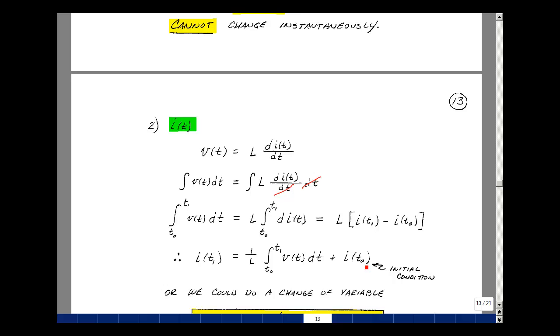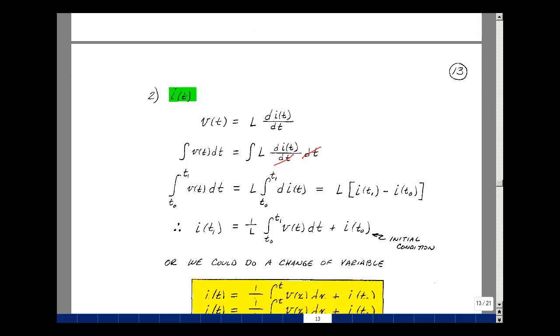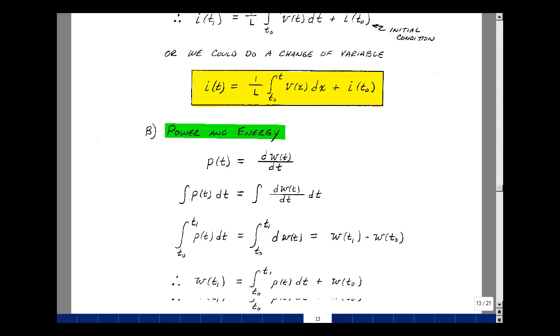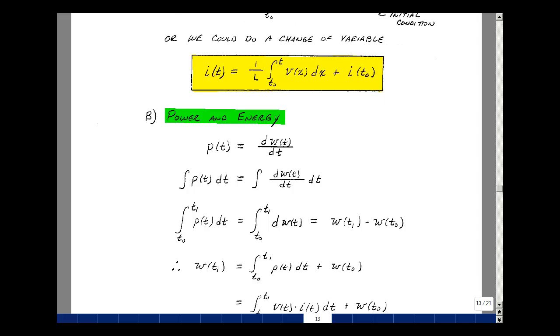This is called the initial condition. This is the value that we start with and then we add to that current the integral of the voltage over the interval of interest divided by the inductance. We can do a change of variable, replace T1 by T. We'll use a dummy variable x here because having T with dt means something different. This will be a general equation for the current through an inductance based on the voltage across it.